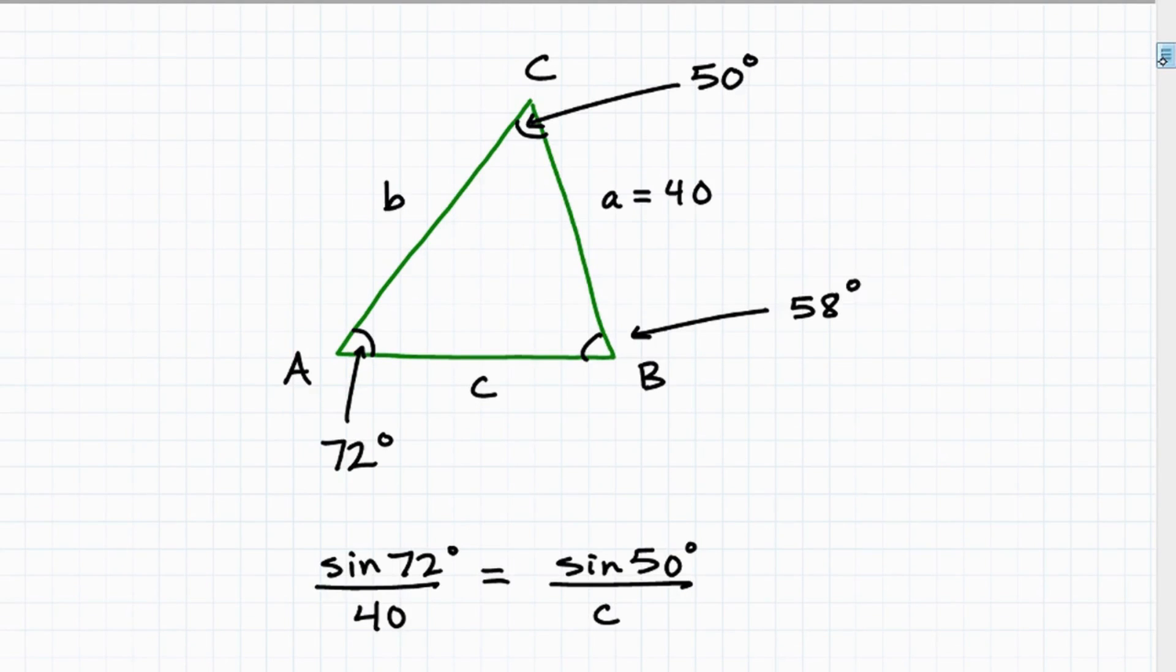All right. So very easy, right? So just take these two angles, subtract, take 180, subtract away these two angles, and you get angle B being 58.